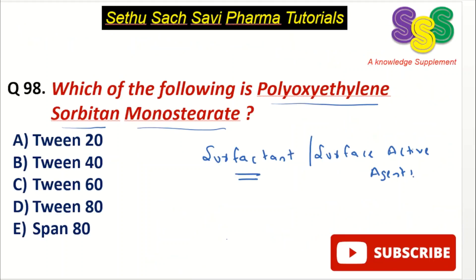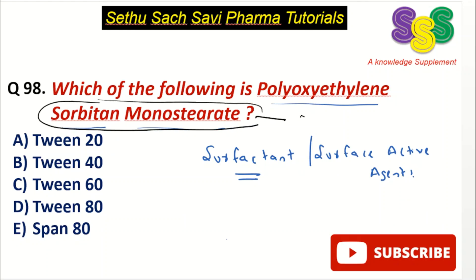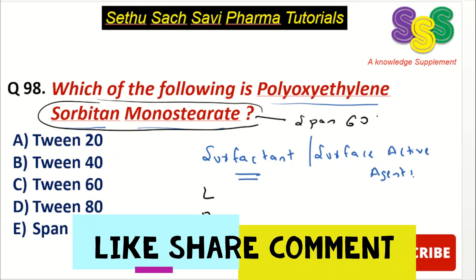Coming back to our question: which of the following is polyoxyethylene sorbitan monostearate? Simply, sorbitan monostearate means it will be span, and using the LPSO mnemonic, stearate comes at 60, so it is span 60. Now if you add a polyoxyethylene group to this, span 60 will become tween 60. So the correct answer for this question will be C choice, tween 60.